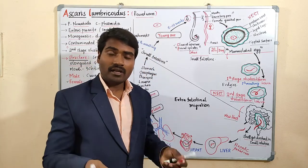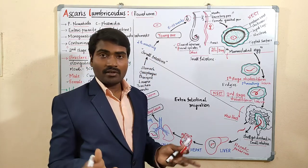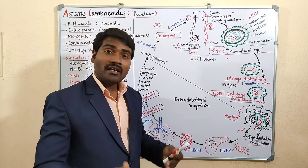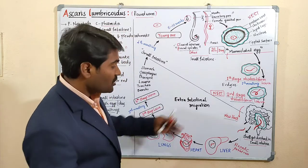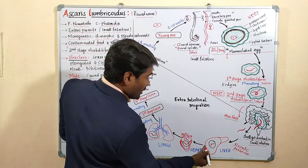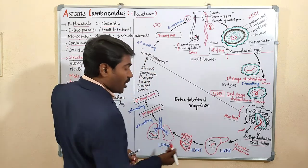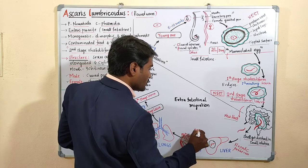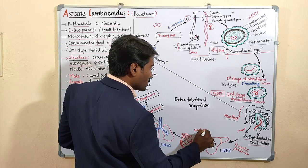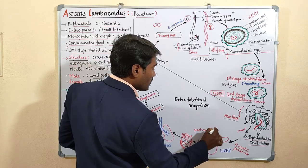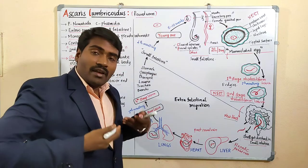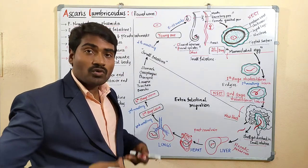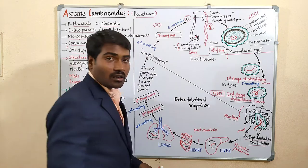Inside the liver, the larva feeds and stays for some time. It then migrates from the liver to the heart through the post-caval vein, also called the inferior vena cava.